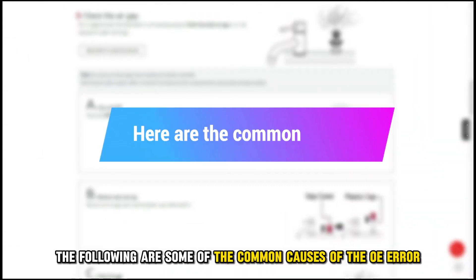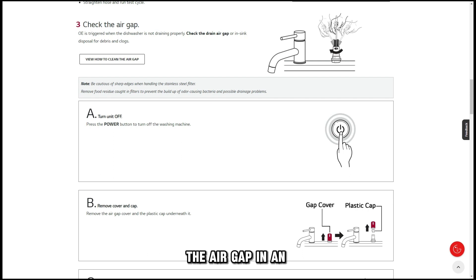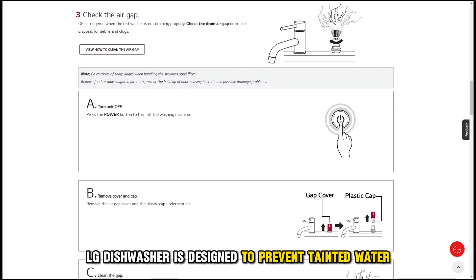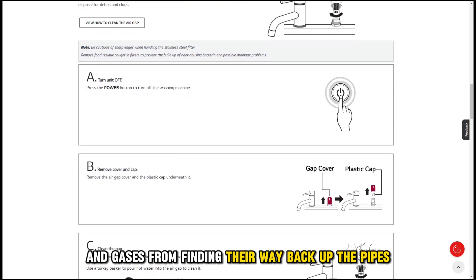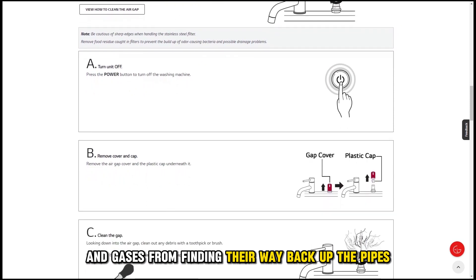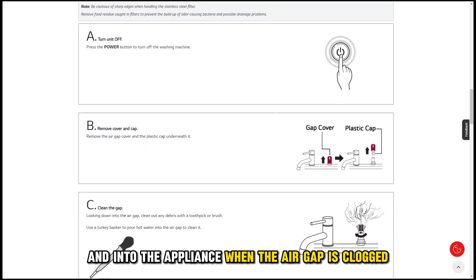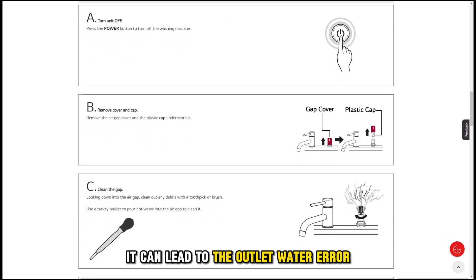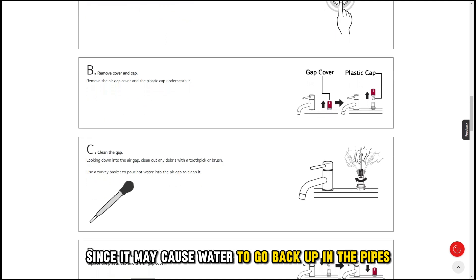The following are some of the common causes of the OE Error. A clogged air gap: The air gap in an LG dishwasher is designed to prevent tainted water and gases from finding their way back up the pipes and into the appliance. When the air gap is clogged, it can lead to the outlet water error since it may cause water to go back up in the pipes.